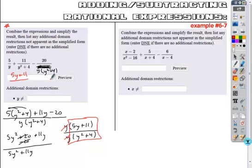5y plus 11 in the numerator, y squared plus 4 in the denominator. And then my domain restriction, because I canceled a factor from my denominator, I have to account for that additional domain restriction. y can't be a 0, and so that would be my final answer for this. That's it. Thank you.